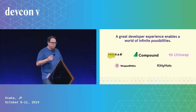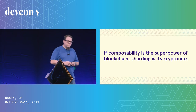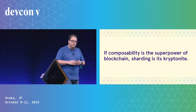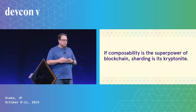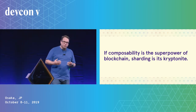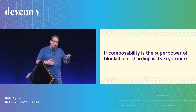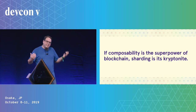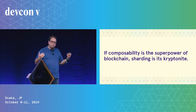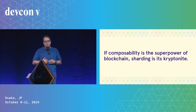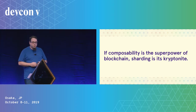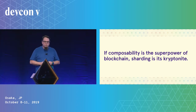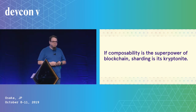I get real worried, because I fear that if composability is the superpower of blockchain, then sharding — and in particular forcing asynchronous communications between smart contracts — could be its kryptonite.